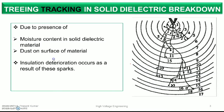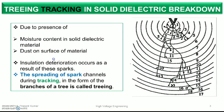Insulation deterioration occurs as a result of sparks. We track that spark path — this is the spark, and when we track it, that process is called tracking. Treeing is the phenomenon in which the spark generally takes the form of a tree, like the roots of a tree, and when we trace that path, that process is called tracking.